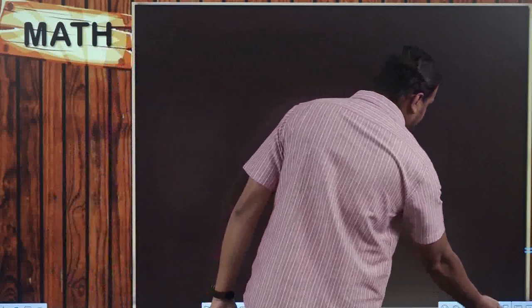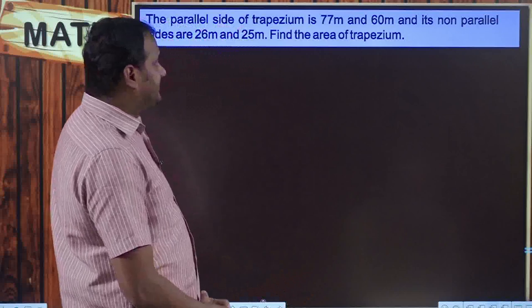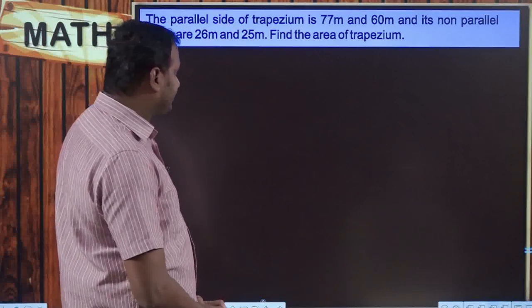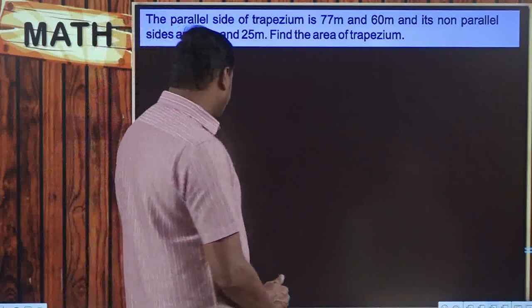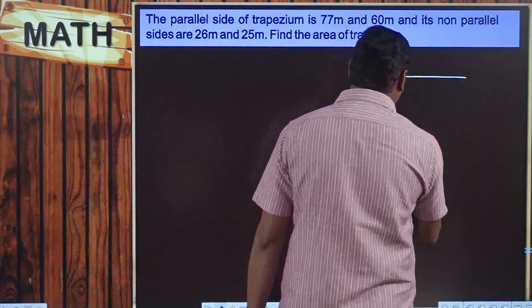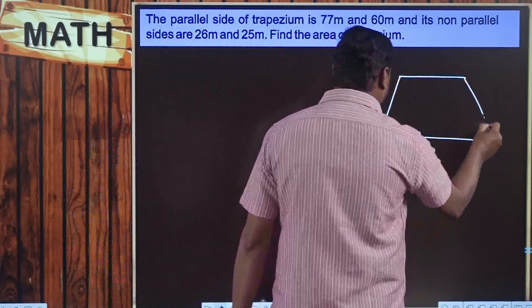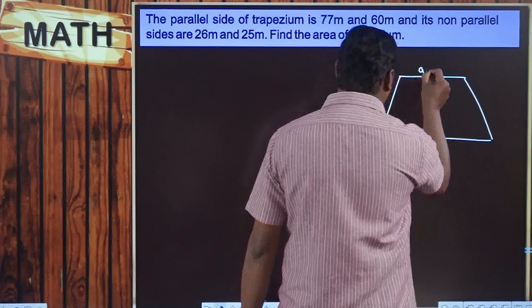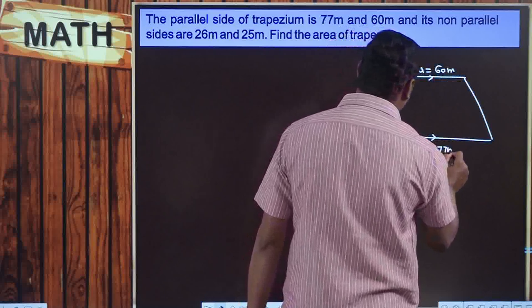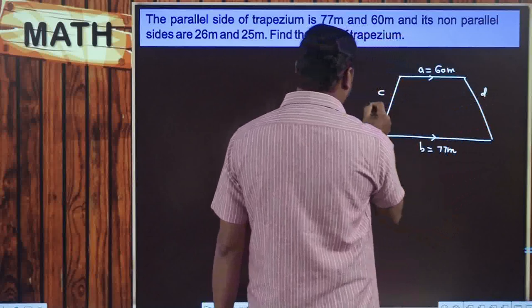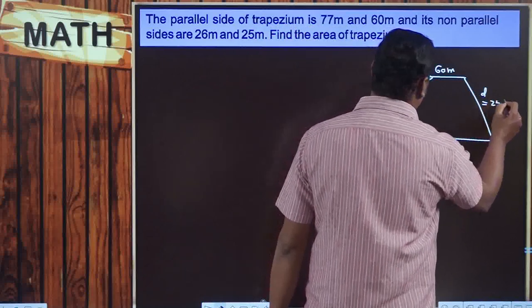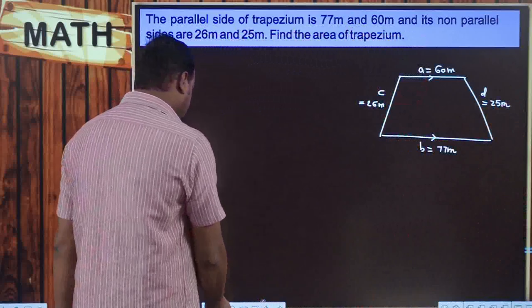Let us have a look at these problems. The very first problem is: the parallel sides of a trapezium are 77 meters and 60 meters, and its non-parallel sides are 26 meters and 25 meters. Find the area of the trapezium. In order to find the area, I am going to take a trapezium where the parallel sides are a and b: a is 60 meters and b is 77 meters, c is 26 meters and d is 25 meters.